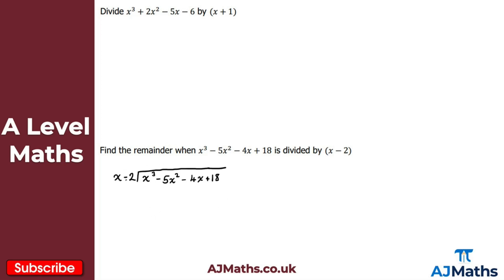Dividing x cubed by x gives x squared. Multiplying x squared by the divisor gives x cubed and minus 2x squared. Now we subtract — x cubed minus x cubed is zero — but take care with the signs: minus 5x squared minus minus 2x squared is the same as minus 5x squared plus 2x squared, which gives minus 3x squared.